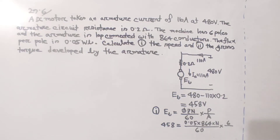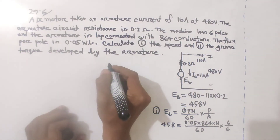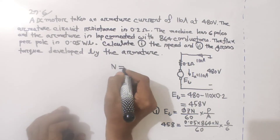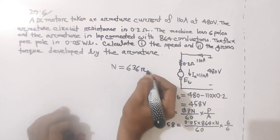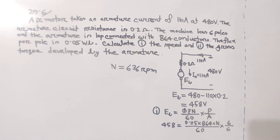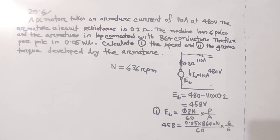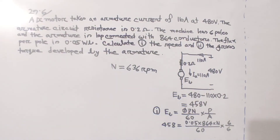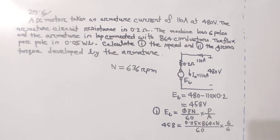After calculation, the speed N comes out to 636 RPM.